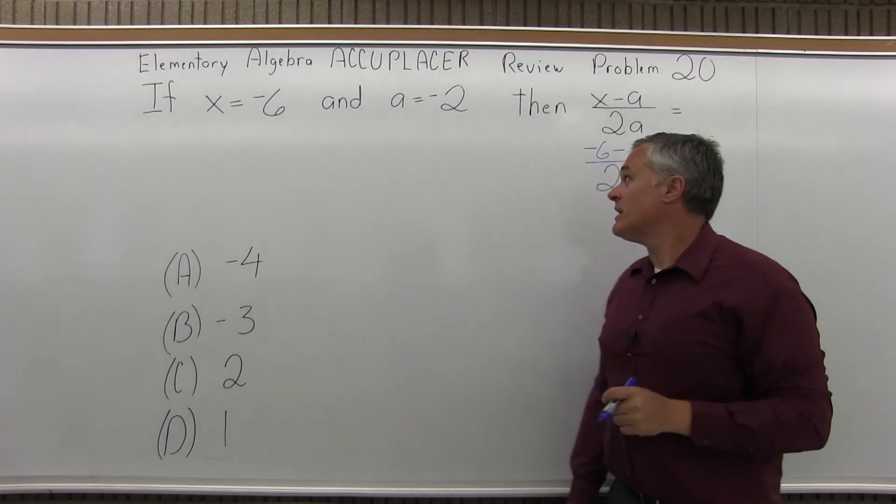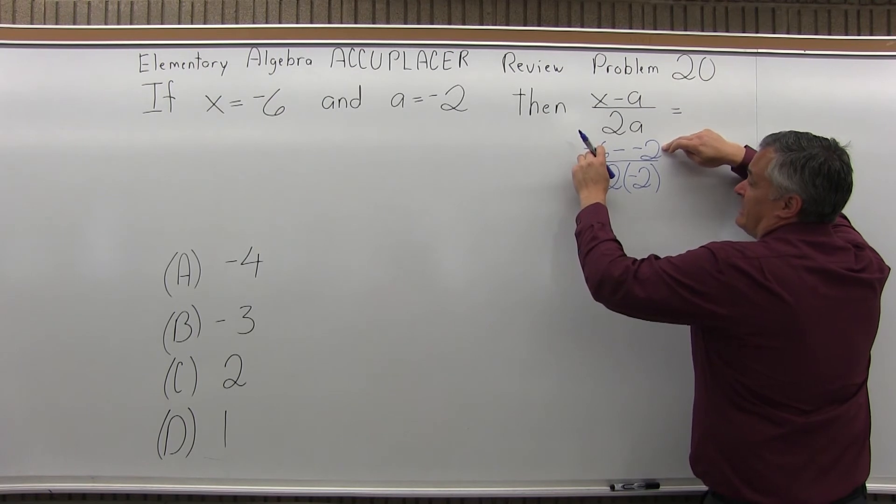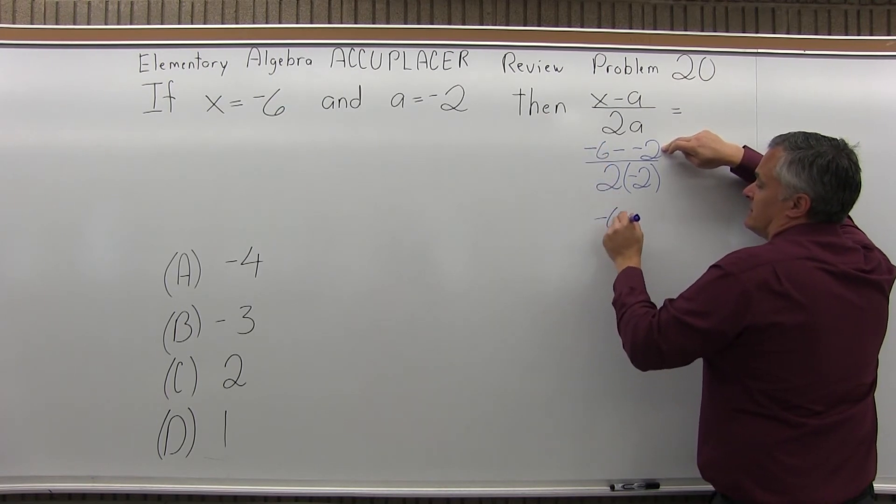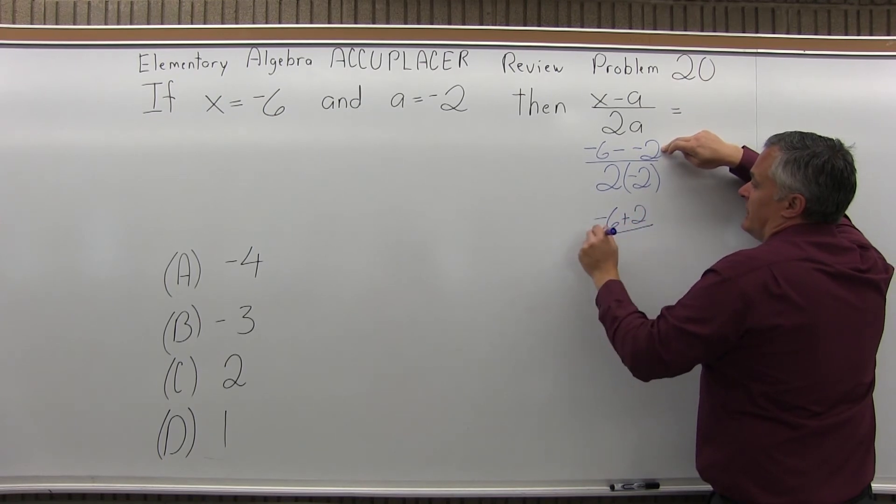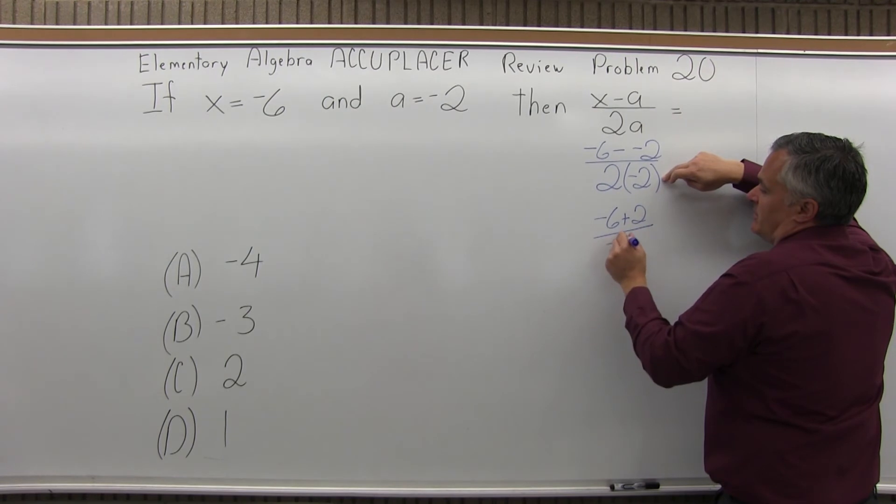Let's start to simplify the math on top. This is really negative 6 plus 2. And then in the denominator, we can simplify that a little bit, it'll be negative 4.